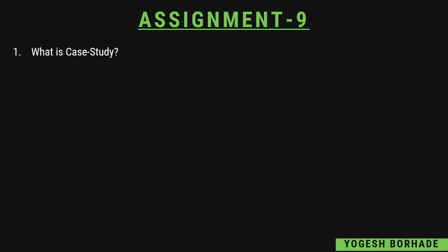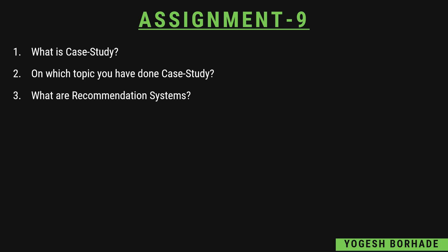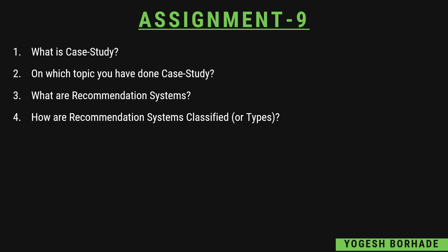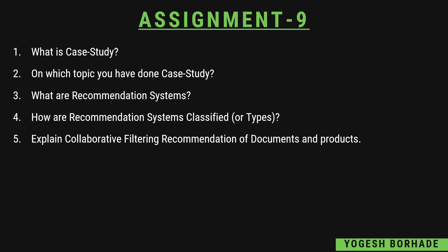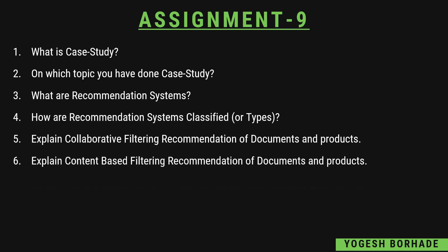Assignment nine is basically a case study. They might ask what is the case study and on which topic you have done it. In the syllabus there are optional topics — product recommendation, doctor, music, and one more. Check your syllabus to see which topic you prepared. Also prepare what are recommendation systems and how they work, how recommendation systems are classified or their types, and explain collaborative filtering recommendation of documents and products and content-based filtering recommendation.